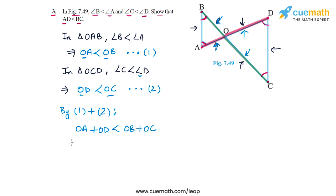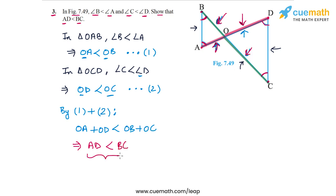Now, OA plus OD is simply AD, so AD must be less than OB plus OC. And OB plus OC is BC. Therefore AD is less than BC, which is exactly what we had to prove. This completes our proof that AD must be less than BC.